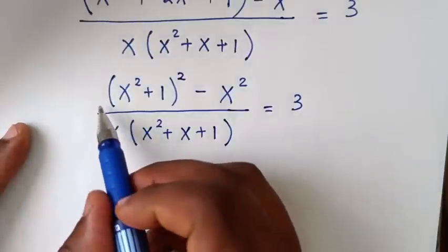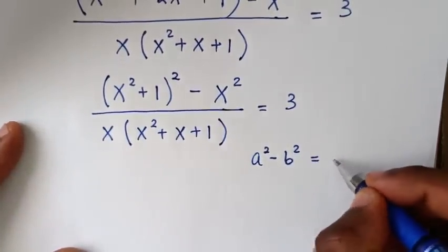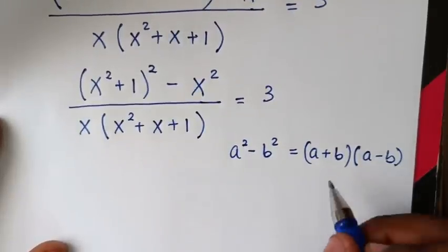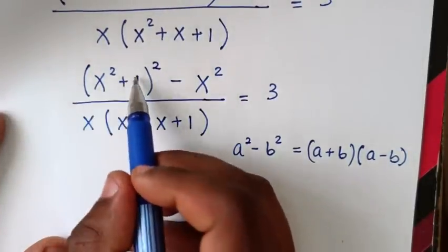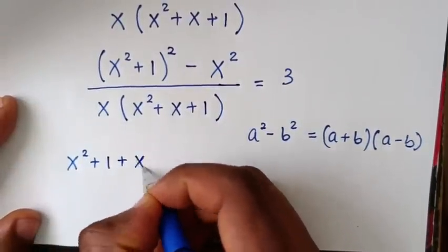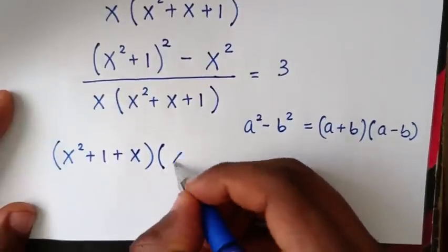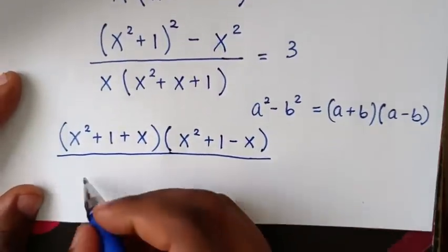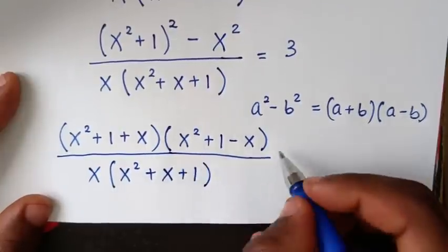The numerator is now in the form of a perfect square difference. Using the rule a² minus b² equals (a + b)(a − b), we factor it: a is (x² + 1) and b is x. So the numerator becomes (x² + 1 + x)(x² + 1 − x), over the denominator x(x² + x + 1), equal to 3.